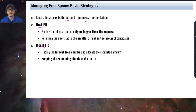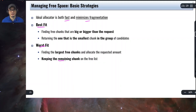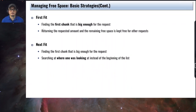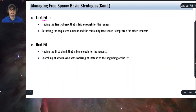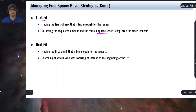The second strategy is worst fit: find the largest free chunk and allocate the requested amount, then keep the remaining chunk on the free list. The third is first fit: find the first chunk that is big enough for the request. Unlike best fit, first fit does not involve searching the entire free list — once you find something large enough, you allocate it immediately, split the chunk, and return the remaining free space to the free list.